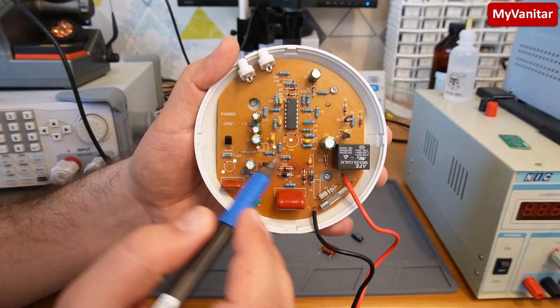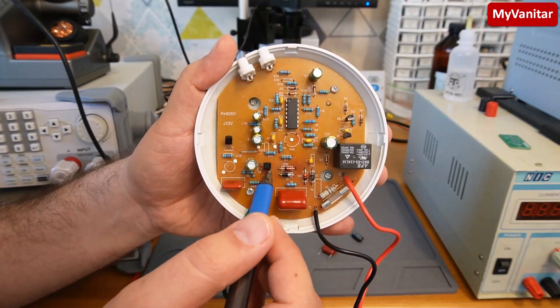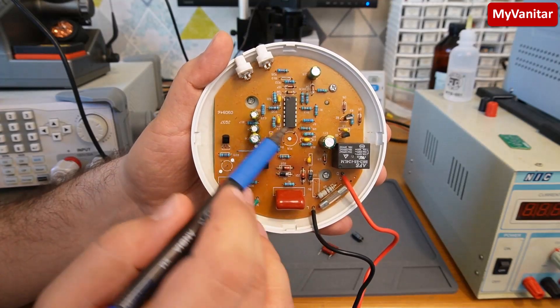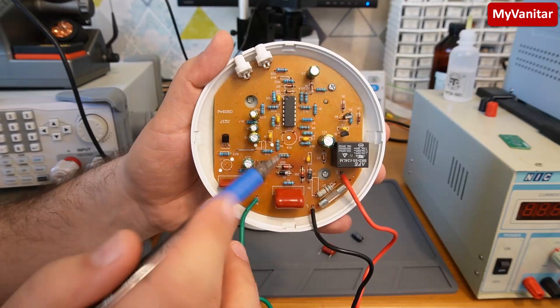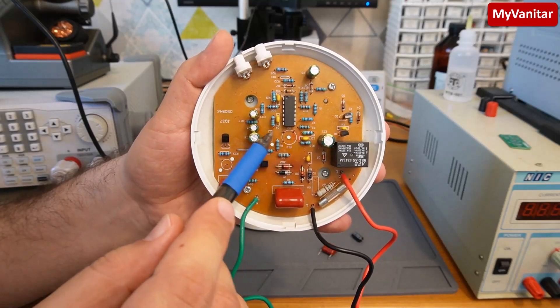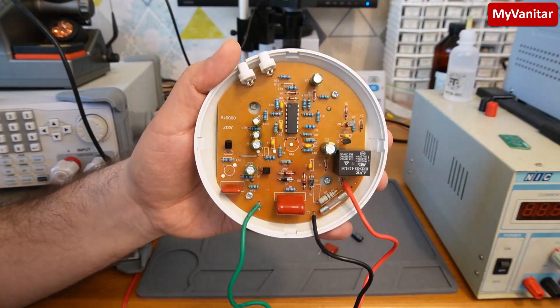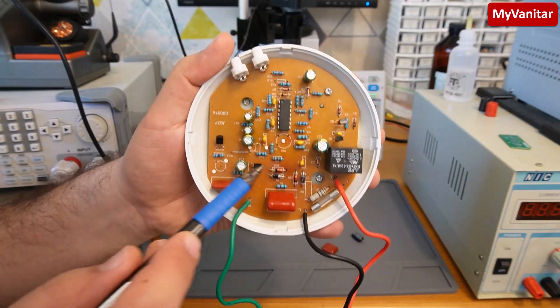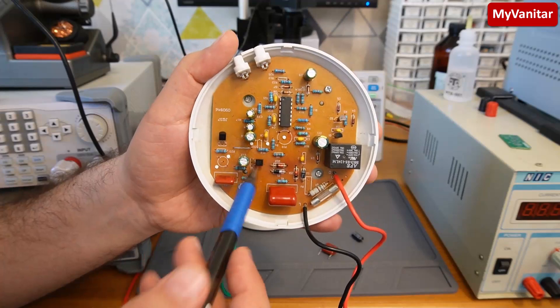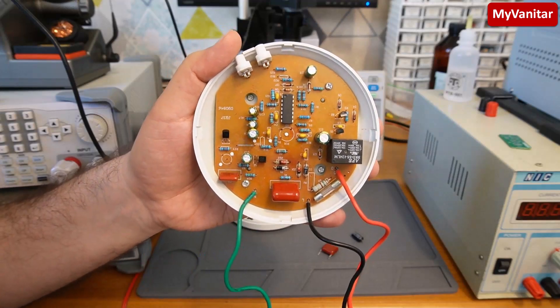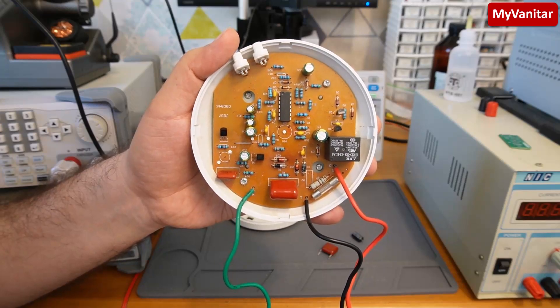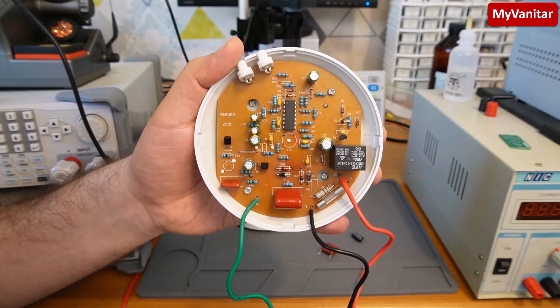This is a linear regulator because we need a fixed and stable supply to supply the sensors and the op-amp. So that's why they have used this linear regulator. The part number is 78L08. An 8-volt regulator.